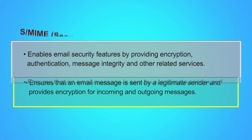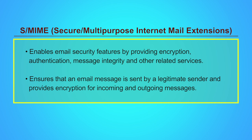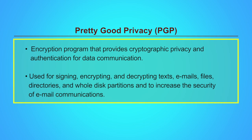What is S/MIME? Secure Multi-purpose Internet Mail Extensions enables email security features by providing encryption, authentication, message integrity and other related services. It ensures that an email message is sent by a legitimate sender and provides encryption for incoming and outgoing messages. Pretty Good Privacy — PGP — is an encryption program that provides cryptographic privacy and authentication for data communication. PGP is used for signing, encrypting and decrypting texts, emails, files, directories and whole disk partitions to increase the security of email communications.